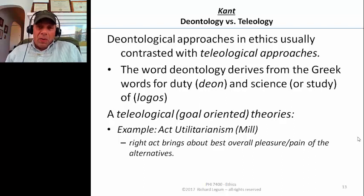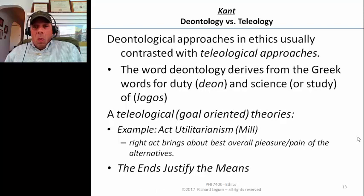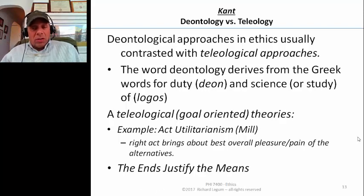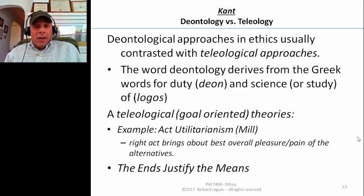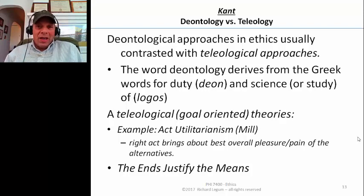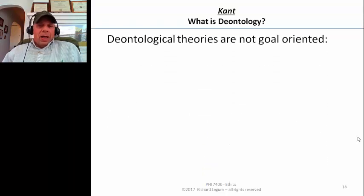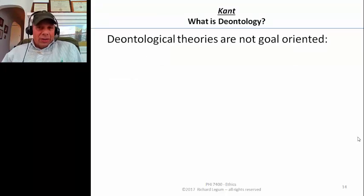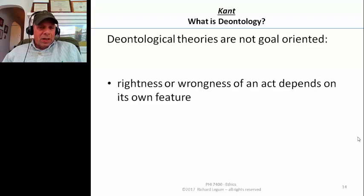What's important for the morality of an action is what actually happens as a consequence. Sometimes people say that a teleological approach is one in which the ends — that is, what results from the action — justify what you're doing. So the action is right if it has good ends. By contrast, deontological theories are not goal-oriented in this way; it doesn't depend on the outcome.